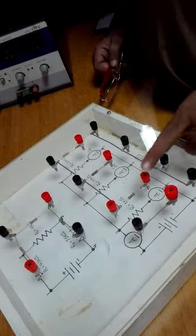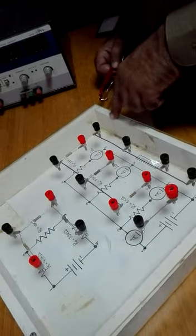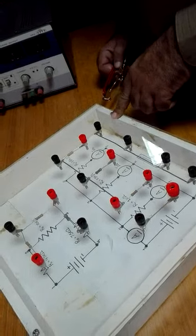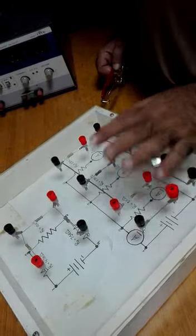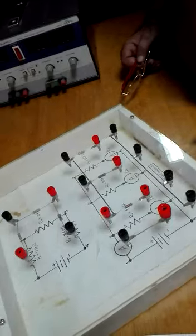The current coming out from the source is entering towards the node. The branch currents start leaving from the node. The sum of these three will be together. Please tell us once again.